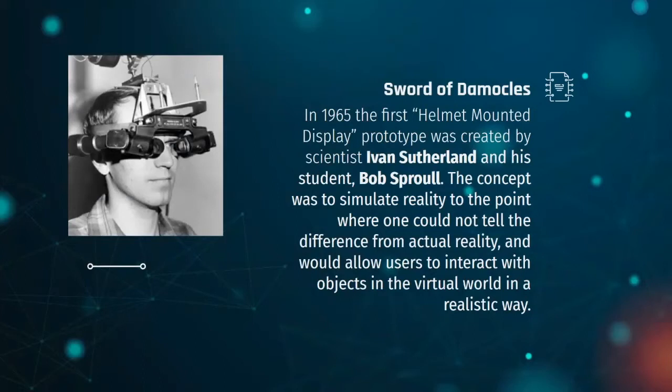A bit later, in the mid-60s, came the Sword of Damocles. In 1965, the first helmet-mounted display prototype was created by scientist Ivan Sutherland and his student Bob Sprawl. The concept was to simulate reality to the point where no one could tell the difference from actual reality, and this in theory would allow users to interact with objects in the virtual world in a realistic way.